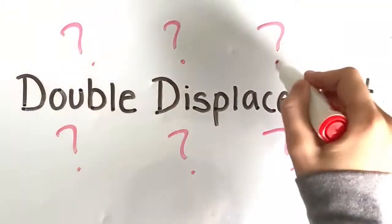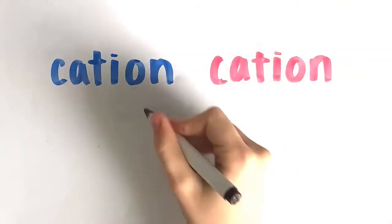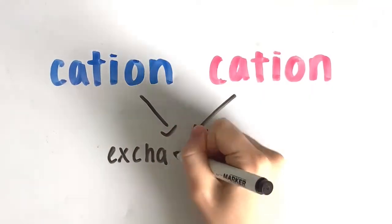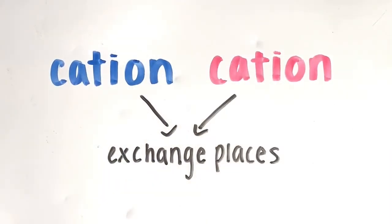What is a double displacement reaction? During this reaction, the cations in two different ionic compounds exchange places, forming two new ionic compounds.